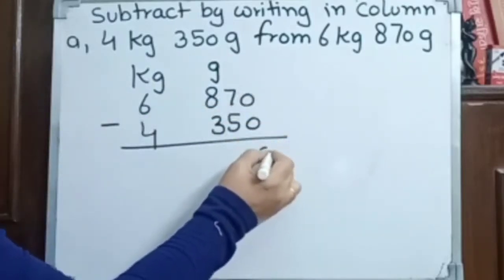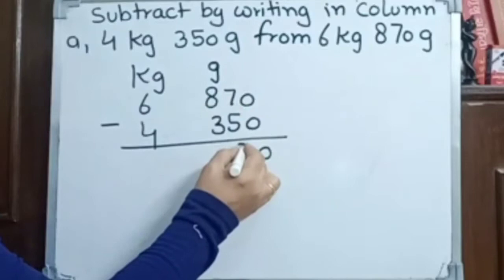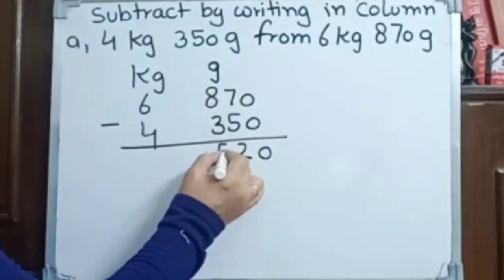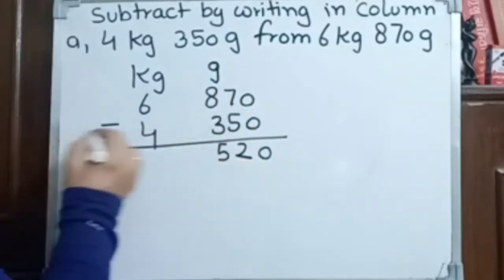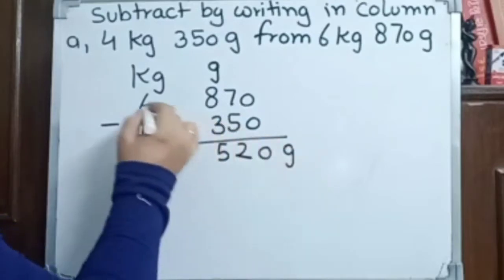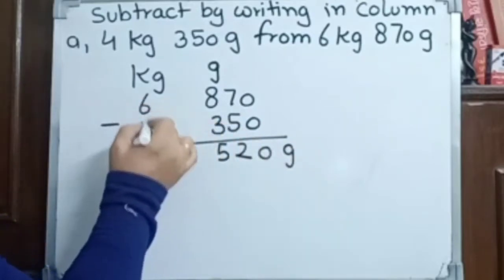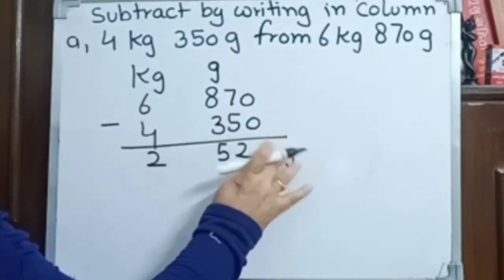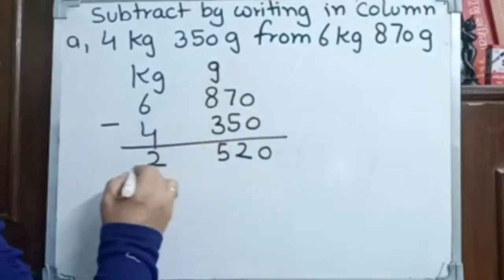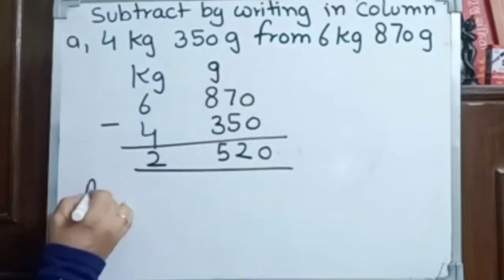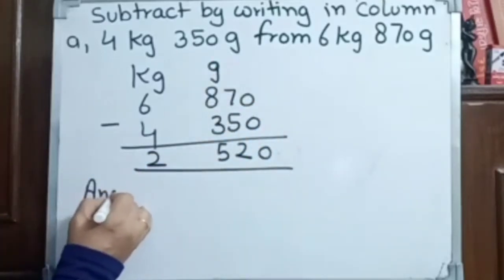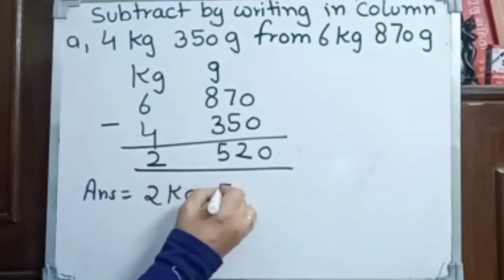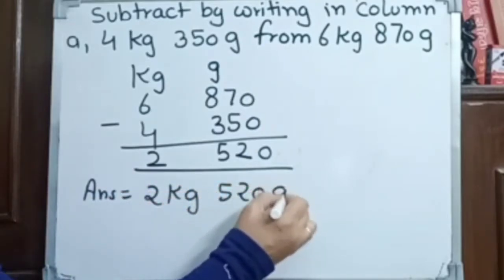0 minus 0 is 0. 7 minus 5 is 2. 8 minus 3 is 5. So here we have the gram part: 520. And 6 minus 4 we have 2 — no need to rewrite that here as it's already written. The answer is 2 kilogram 520 gram.